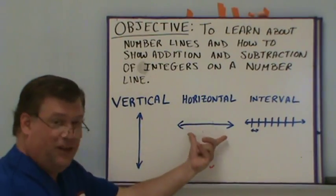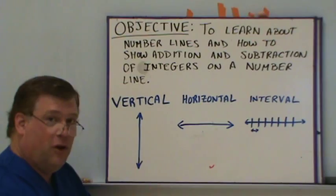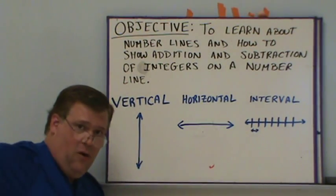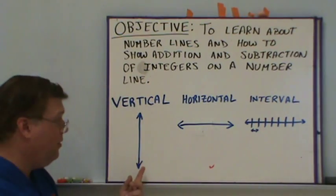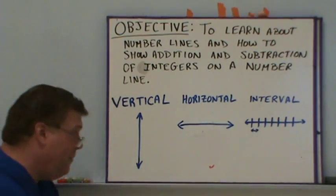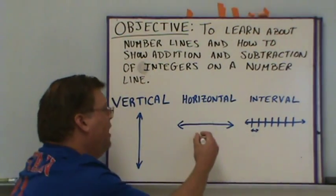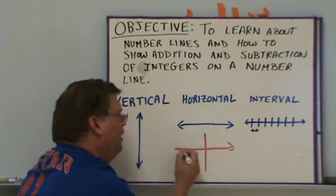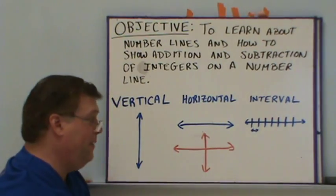Number lines are traditionally horizontal. If you have trouble remembering that word, think about looking across the horizon — that would be horizontal. But they can come in vertical form too. Think about a thermometer; a thermometer is a vertical number line. And if you were to combine a vertical number line with a horizontal number line, you would get what is known as a coordinate plane.